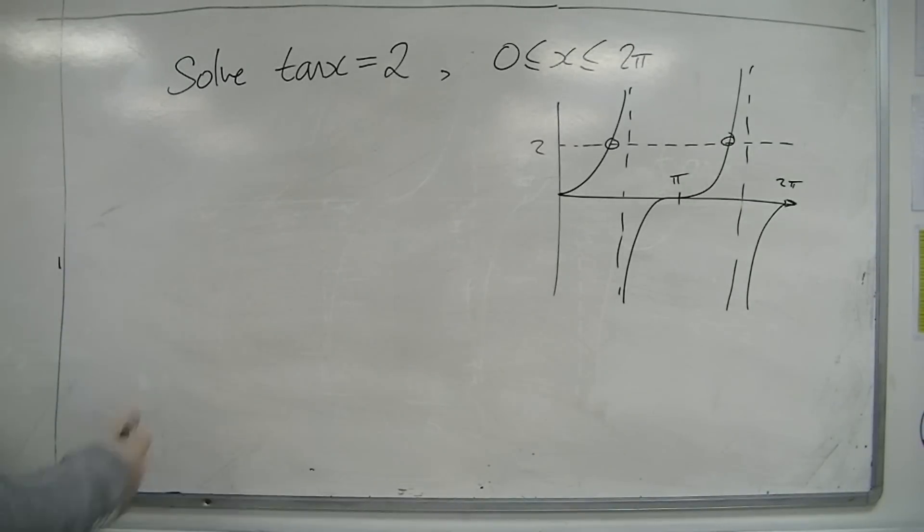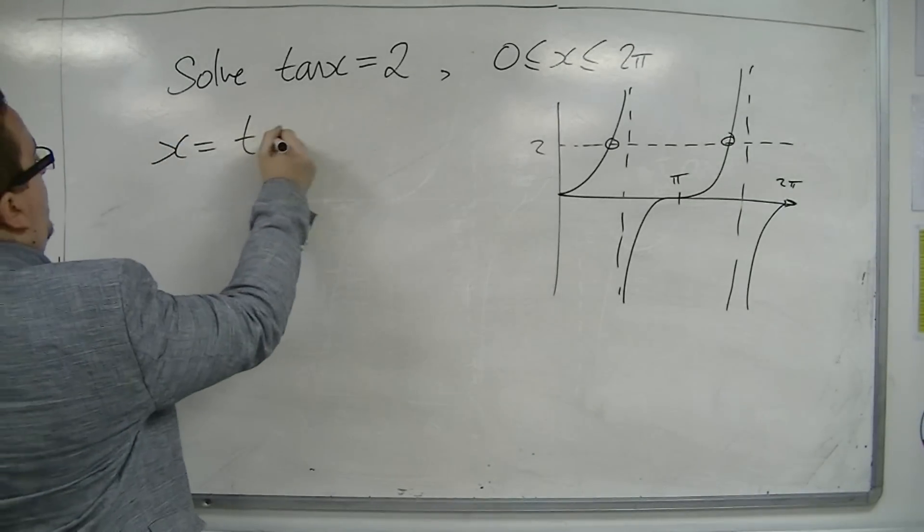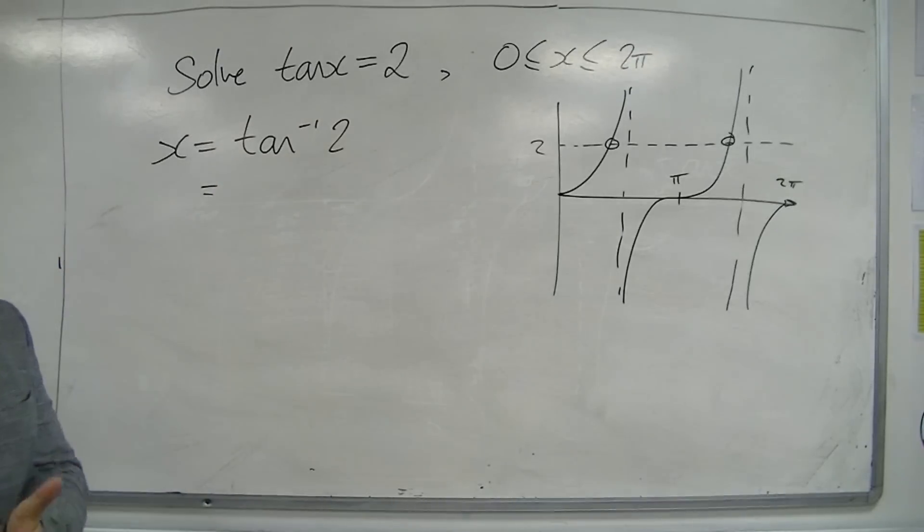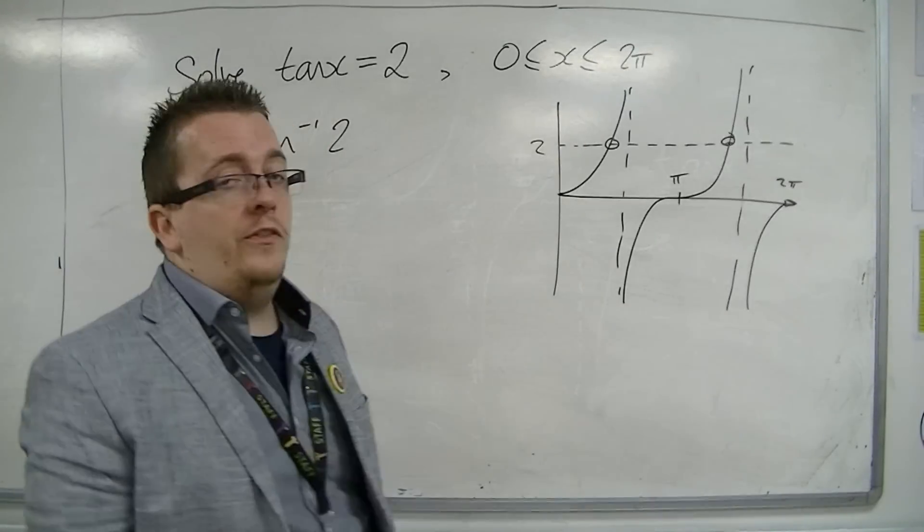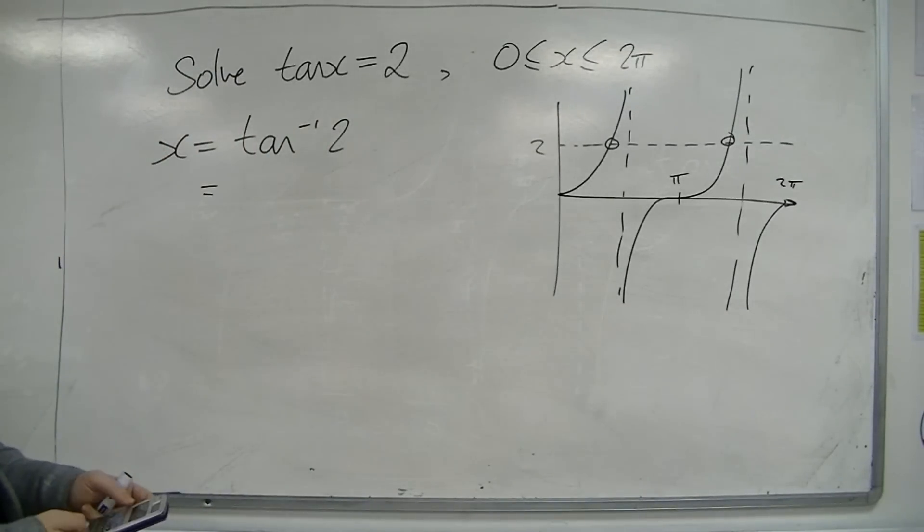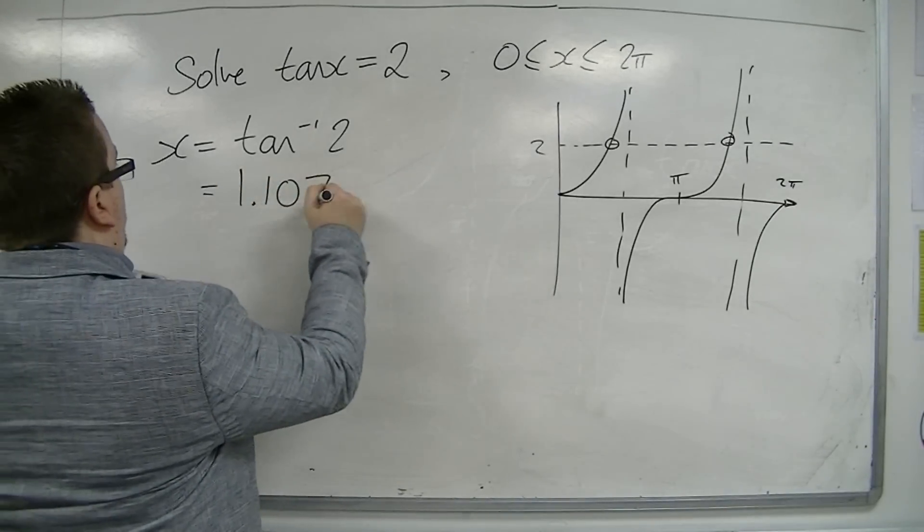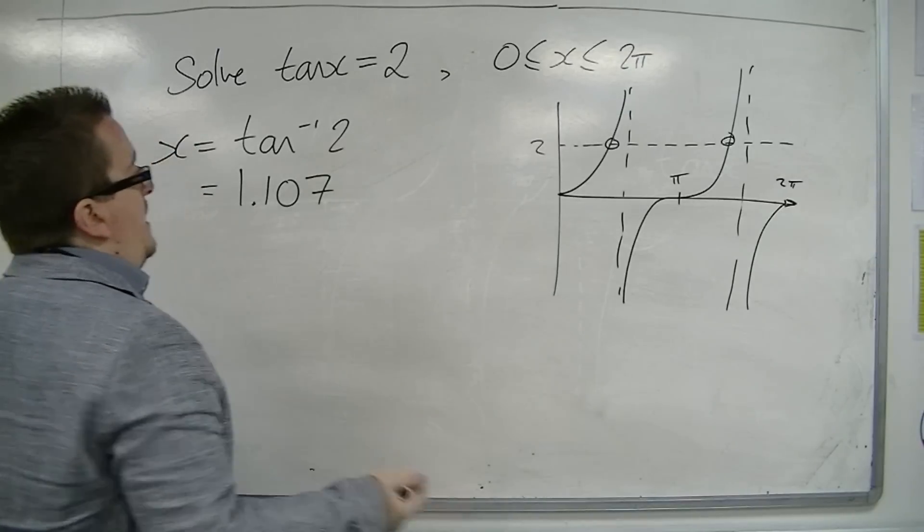Now, when I put inverse tan of 2 into my calculator, making sure that my calculator is in radians, because we're working between 0 and 2π. So inverse tan of 2, the calculator is only going to give you one result back. So this is 1.107 to three decimal places.